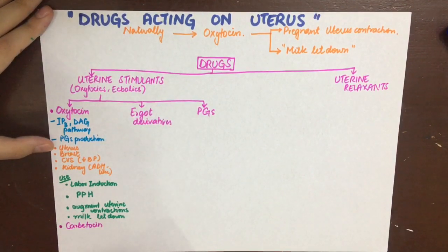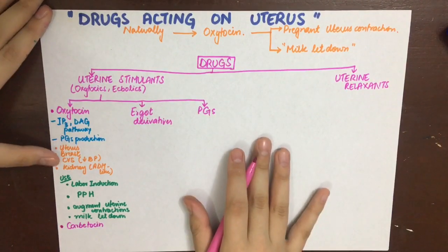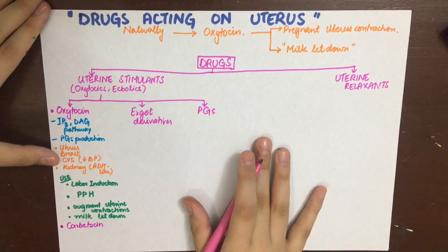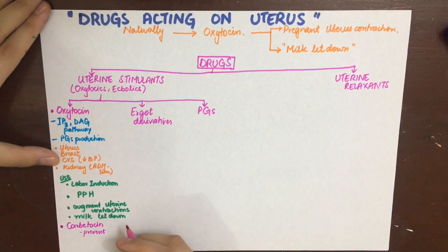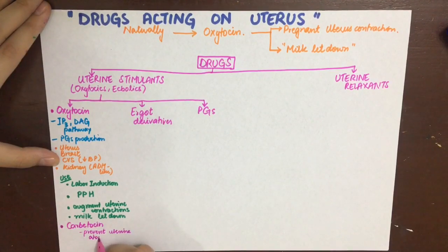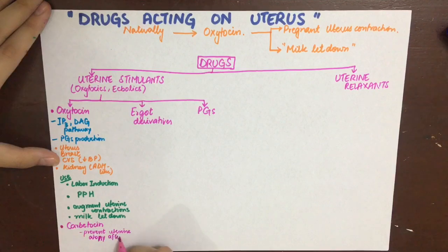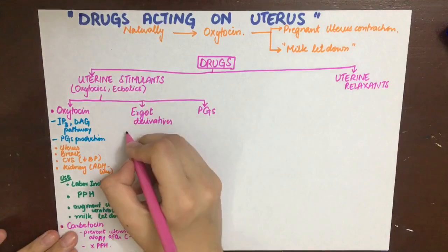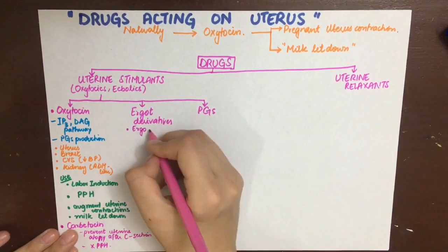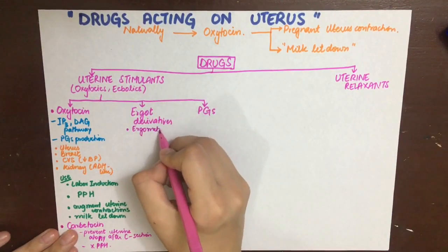Oxytocin can also cause water intoxication if large amounts of fluid are infused along with it. A synthetic analog of oxytocin, carbetocin, is used to prevent uterine atony after caesarean section and to prevent postpartum hemorrhage by contracting the myometrium.